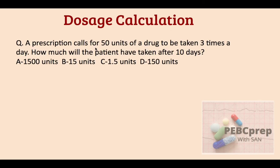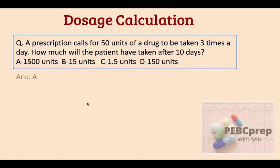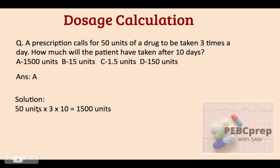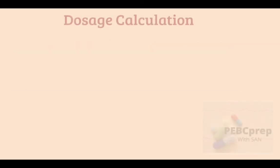Next question: a prescription calls for 50 units of a drug to be taken three times a day. How much will the patient have taken after 10 days? This is the simplest question — 50 units × 3 times/day × 10 days. The answer is 1,500 units.